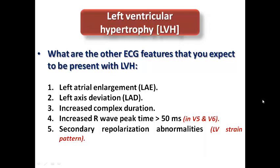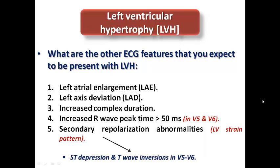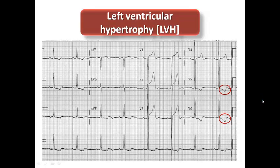Left ventricular hypertrophy is caused by pressure overload on the left ventricle, leading to increased wall thickness, which impairs ventricular depolarization. We would also see an increase in the R-wave peak time — the time interval from the start of the R-wave to its peak — especially in V5 and V6, possibly more than 50 milliseconds. Additionally, secondary repolarization abnormalities called LV strain pattern may appear as ST depression and T-wave inversion. For example, T-wave inversion in V5 and V6 is explained by the strain pattern accompanying LVH.